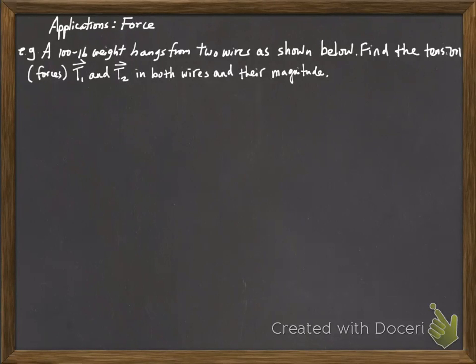In this video lesson, we talk about an application, which is force, after you first learn about a three-dimensional coordinate system and basic definitions of vectors. The problem says a 100-pound weight hangs from the wire as shown below. Find the tension, or forces, T1 and T2 in both wires and their magnitude.